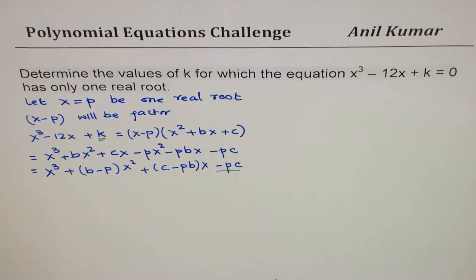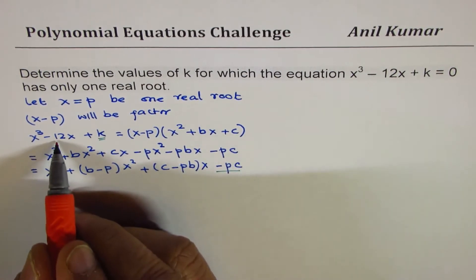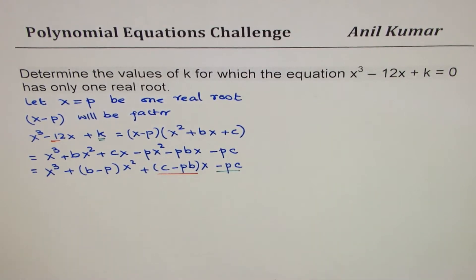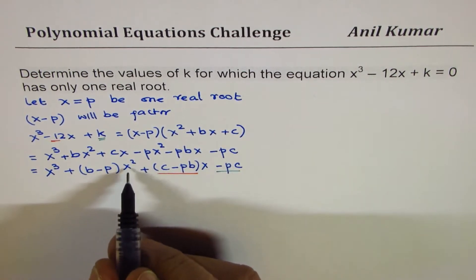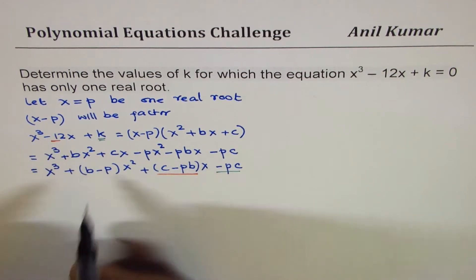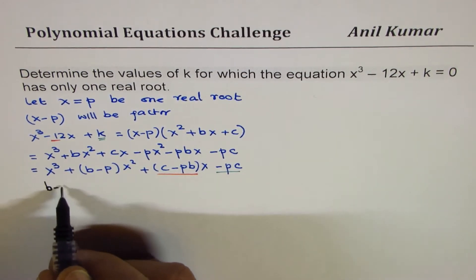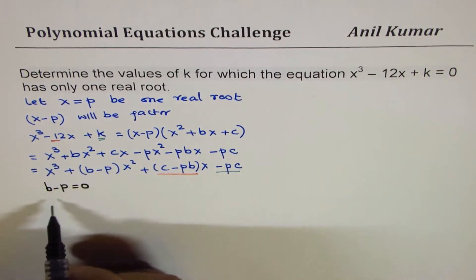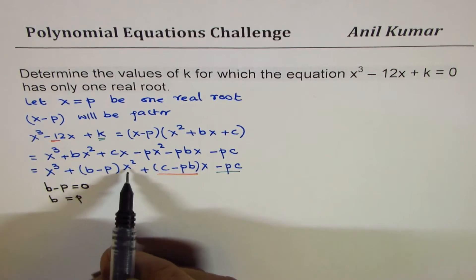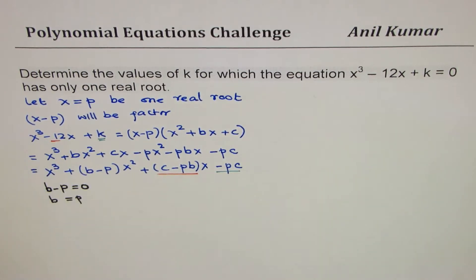And the coefficient of x, which is -12, should equal (c - pb). The coefficient of x² in the original equation is 0, so we equate (b - p) = 0, which gives us b = p. Since the coefficient of x² is 0, this is a very critical point to understand.